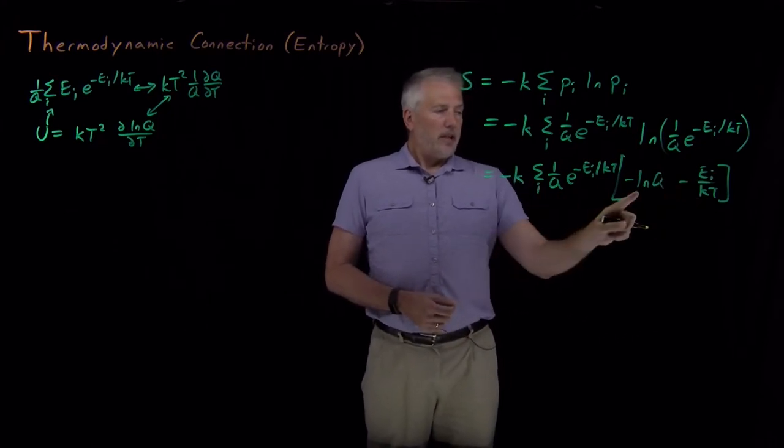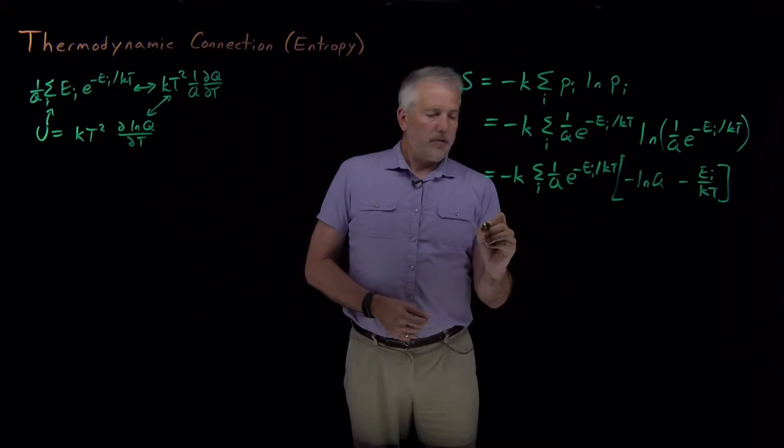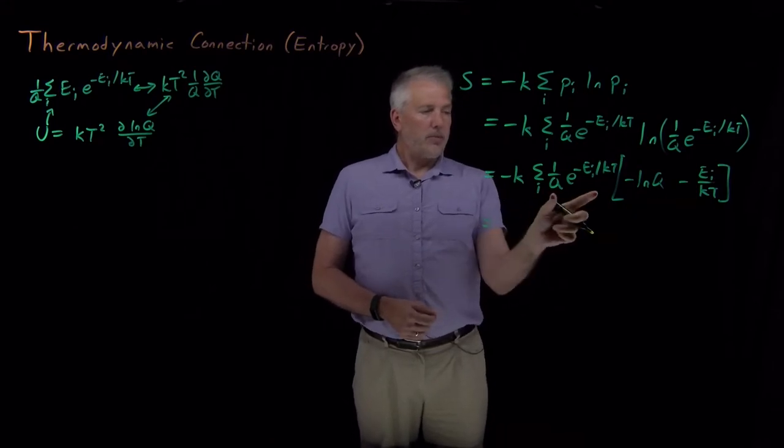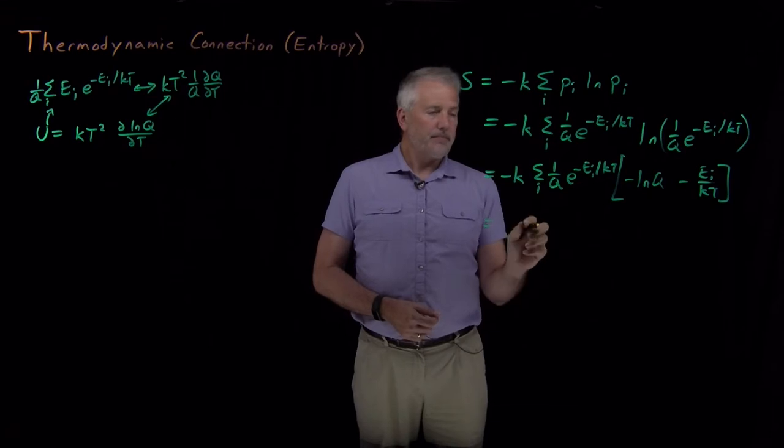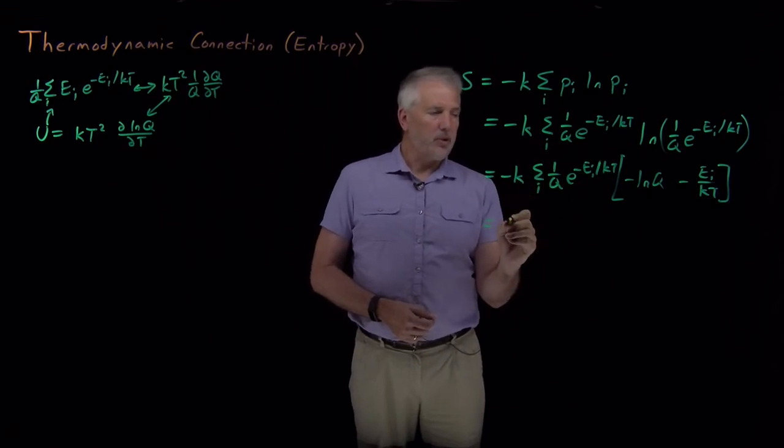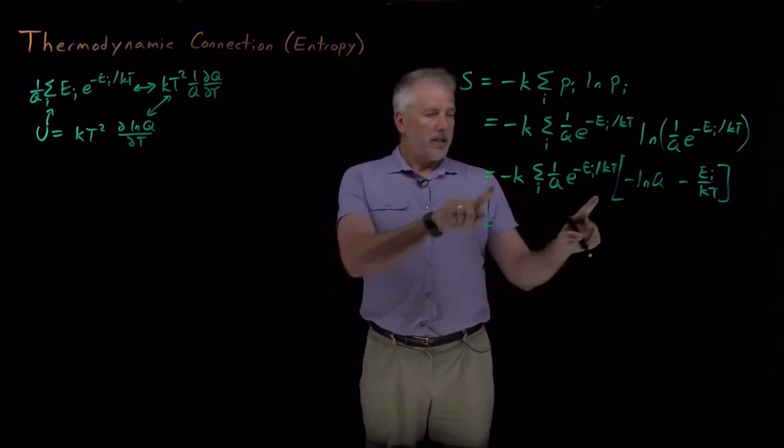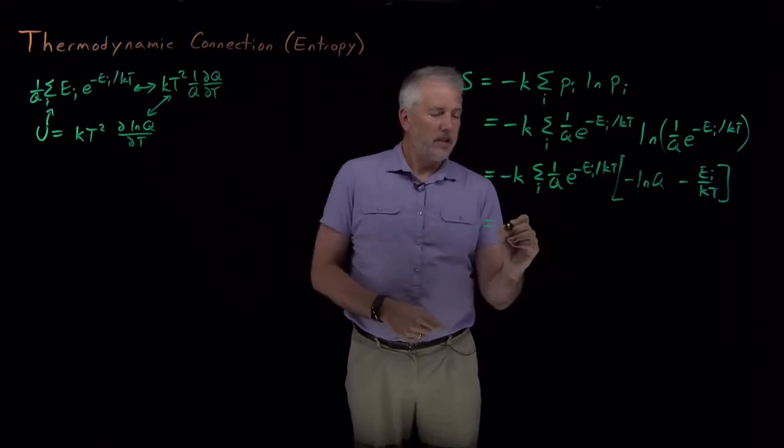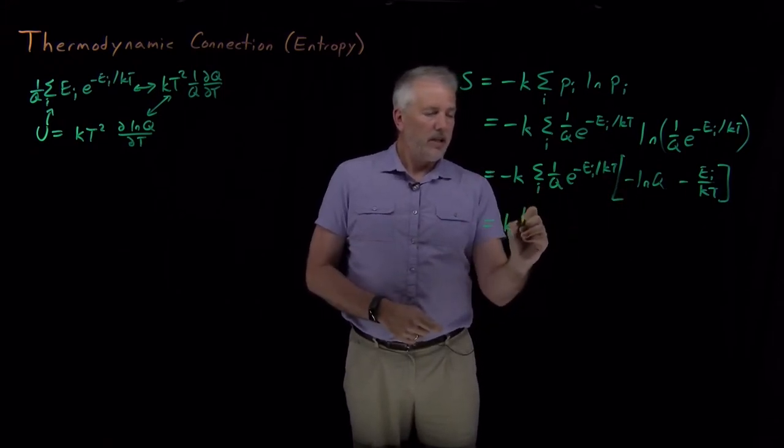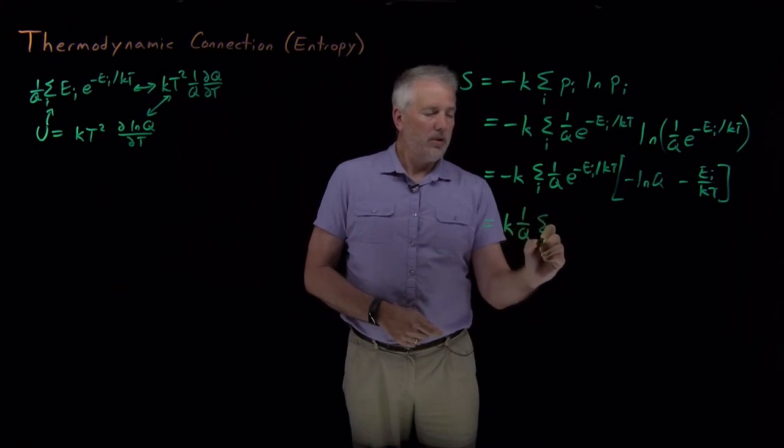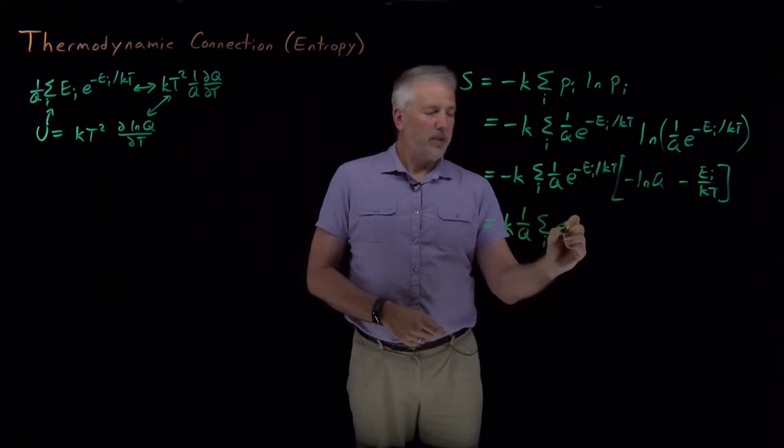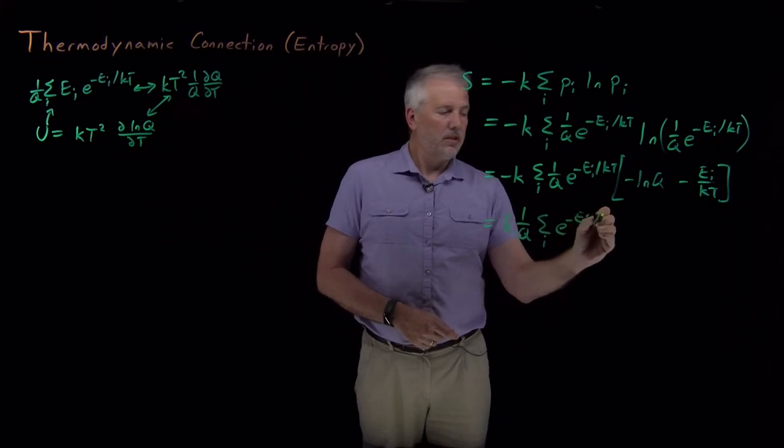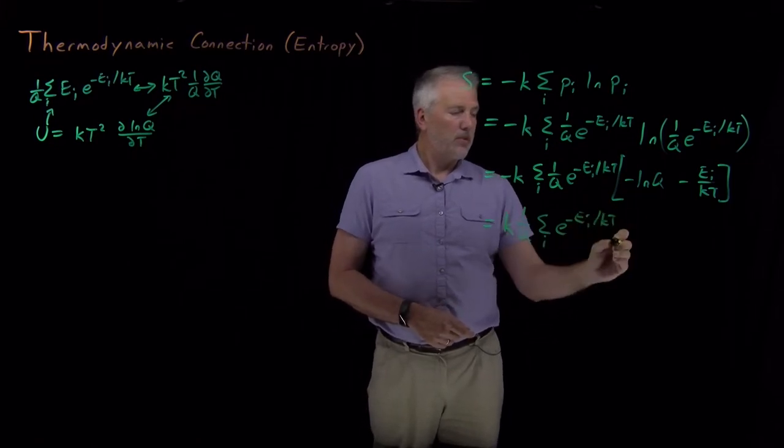So if I now have two terms inside the brackets, if I multiply each of those terms by this 1 over q e to the minus energy over kT inside the sum, so that gives me two different sums, I can cancel all these negative signs. So this negative sign cancels each of those negative signs, and I've got a positive k and a 1 over q and a sum of an exponential times log q.